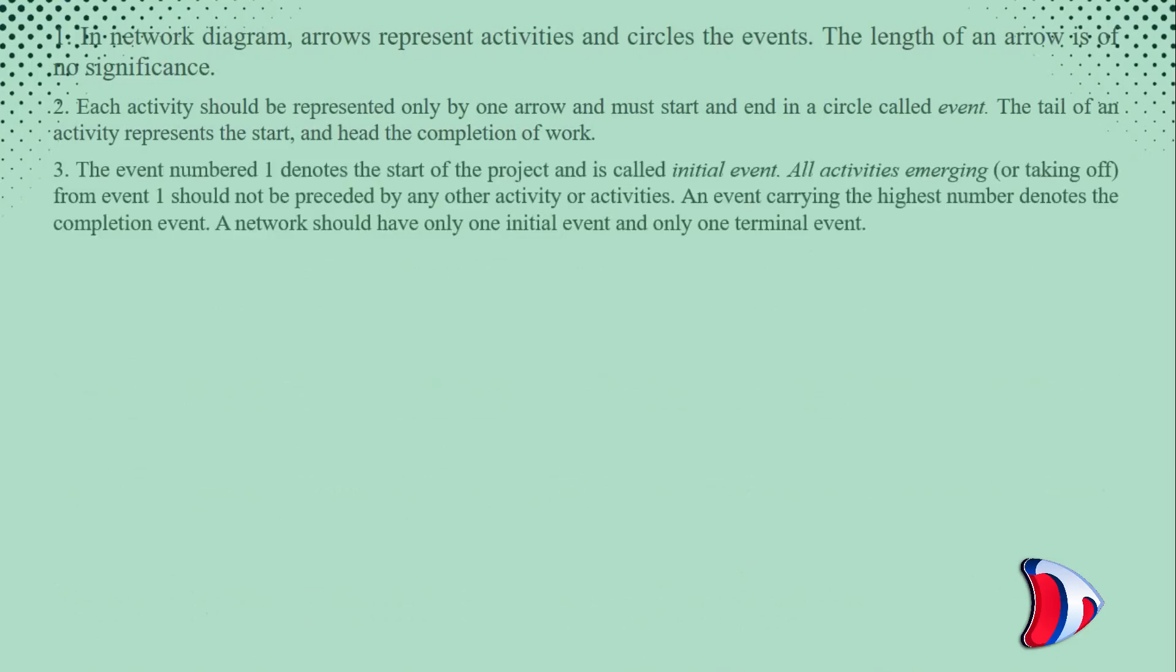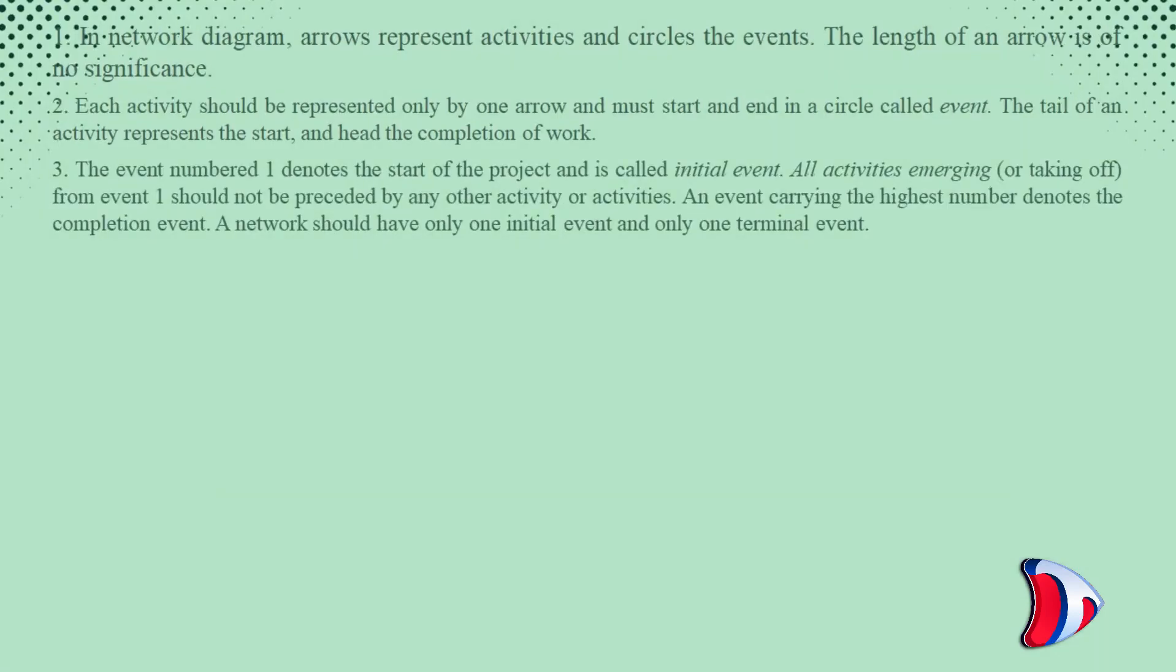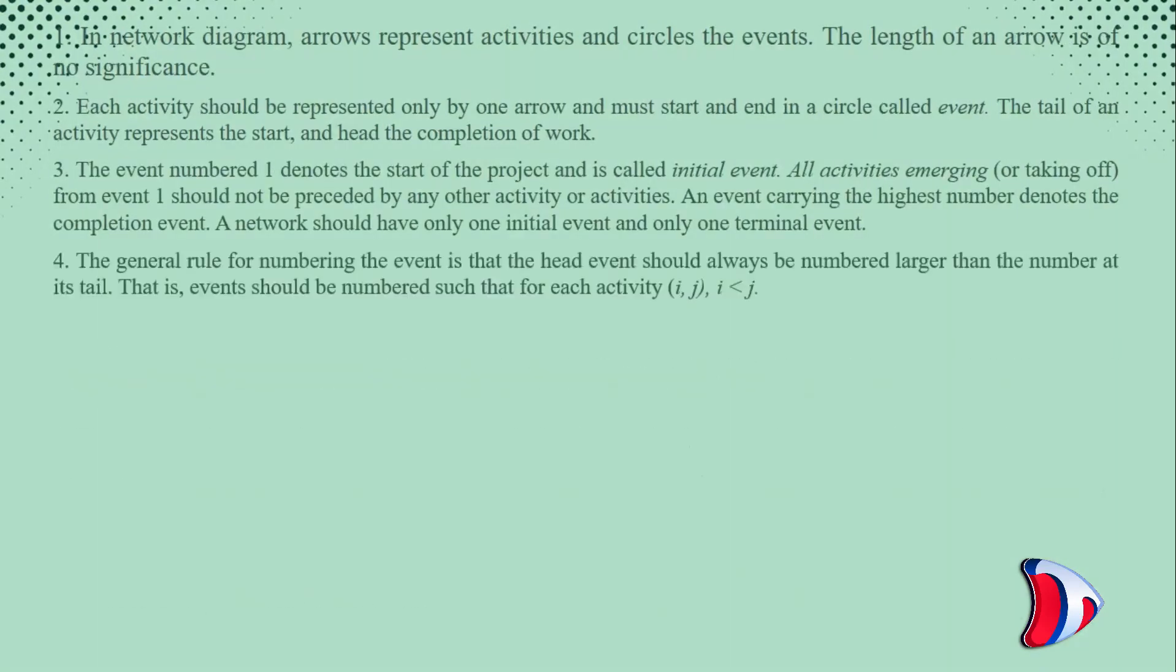The event numbered one denotes the start of the project and is called initial event. All activities emerging or starting from event one should not be preceded by any other activity or activities. An event carrying the highest number denotes the completion event. A network should have only one initial event and only one terminal event.